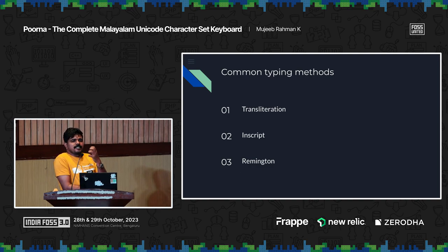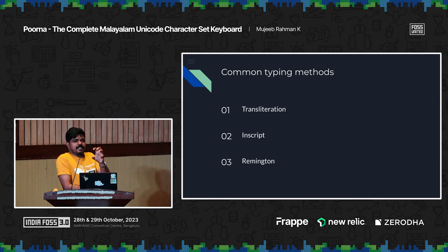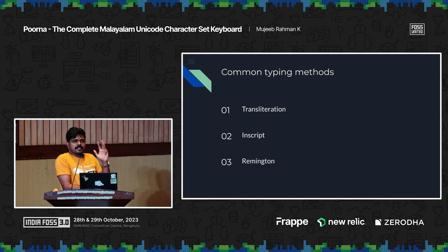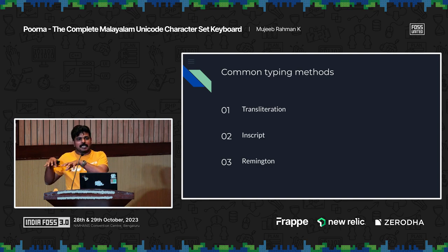Only a few of them know. InScript is a standard which is developed by the Indian government to unify all Indian languages in a standardized manner. In InScript, every key in the keyboard is assigned to a character. For example, D is assigned to a letter R, which is the same in Malayalam, Telugu, Kannada, Hindi — all Indian languages. That is InScript. Remington was an old keyboard, which started from the time of the typewriter.